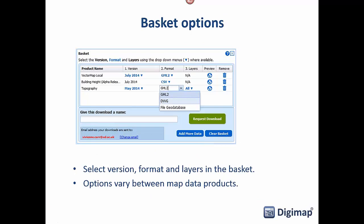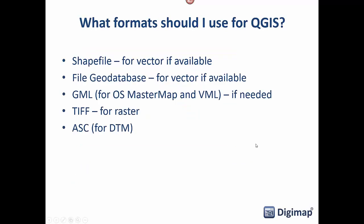Once you're in the basket, a lot of datasets have a choice of format — this is where it's quite important to make the right selection for QGIS. Shapefile is the easiest format to use in QGIS, as with most GIS software, but file geodatabase works in QGIS as well. It's perhaps better known as an ESRI format for ArcGIS, but the file geodatabases produced at EDINA are of the open file geodatabase standard, so they will open in QGIS. GML data will also open or can be converted in QGIS if needed.